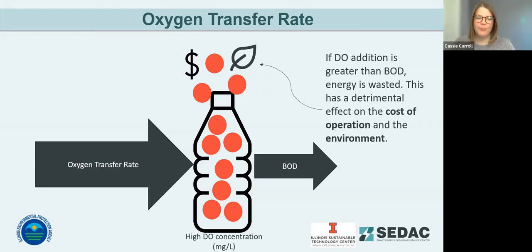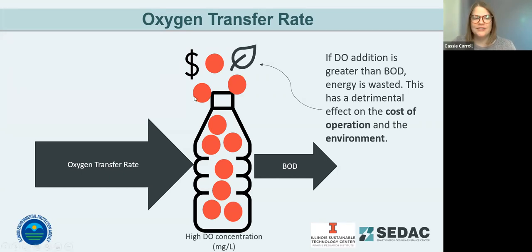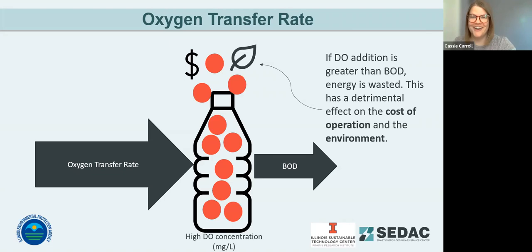In cold weather, say 39 degrees, DO saturation is at about 11 milligrams per liter. In warmer weather, say 70 degrees, saturation is more like 8.7 milligrams per liter. Many of us aim to maintain six milligrams per liter of DO, and if we're significantly above that on a regular basis, we're wasting energy. Also, if you starve your microbes of oxygen, they slow down. Similarly, if you provide too much oxygen, the microbes slow down and aren't as effective. So you must maintain a delicate balance of oxygen transfer rate and BOD.